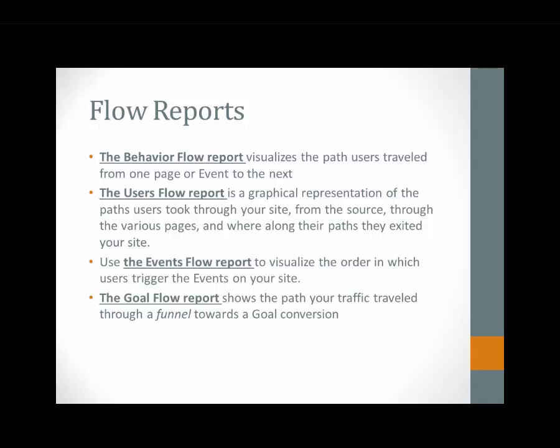Flow reports show what users do when they visit the site. There are roughly four types: Behavior Flow — what behaviors users engage in, such as events or page visits; User Flow — which pages users go through, where they enter and exit; Event Flow — for tracking the path of users who completed a specific event like downloading a PDF; and Goal Flow — the same concept but for goals instead of events.